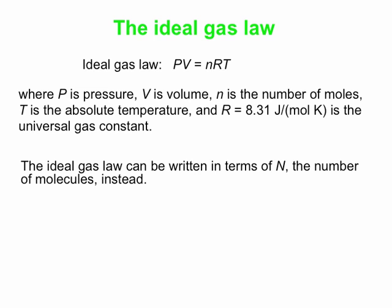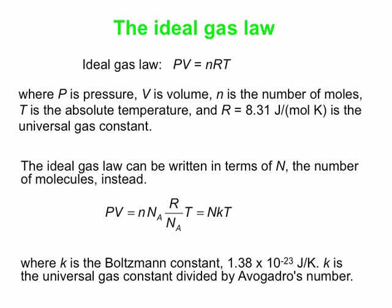Now we can write the ideal gas law in terms of not little n (the number of moles) but capital N (the number of molecules), and that just brings in Avogadro's number. So if we multiply and divide by Avogadro's number, we haven't changed anything. Little n (the number of moles) times the number of molecules per mole—that's what Avogadro's number is—gets you the number of molecules. So lowercase n times N_A is capital N, the number of molecules.